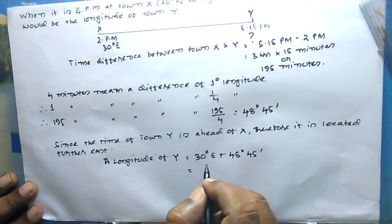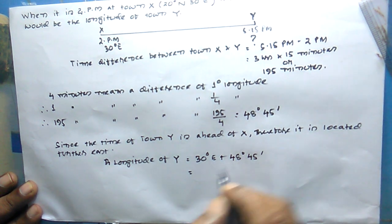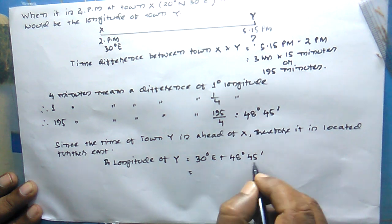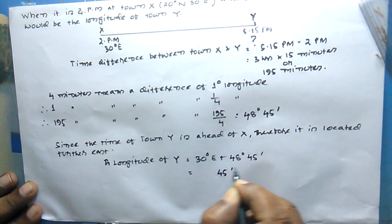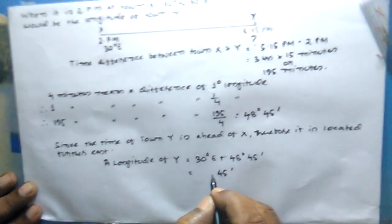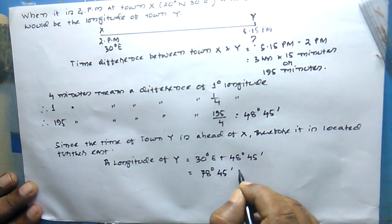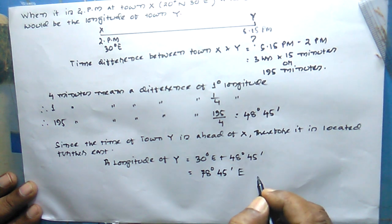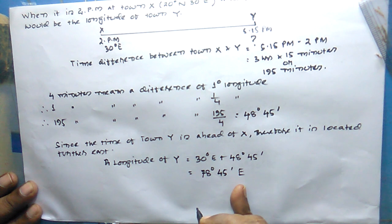Adding these two in rough, 45 will remain 45, giving us 78 degree, 45 minutes east. That is, the longitude of Y is 78 degree, 45 minutes east.